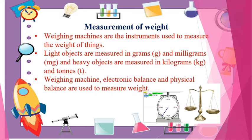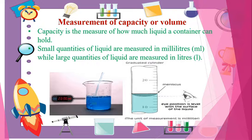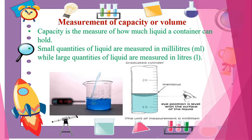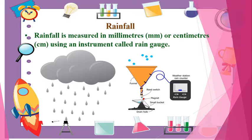Measurement of capacity or volume: capacity is the measure of how much liquid a container can hold. Small quantities of liquid are measured in milliliters, while large quantities of liquid are measured in liters. Rainfall: rainfall is measured